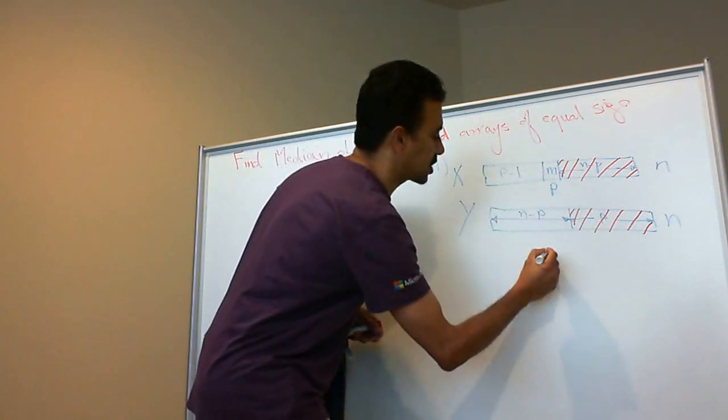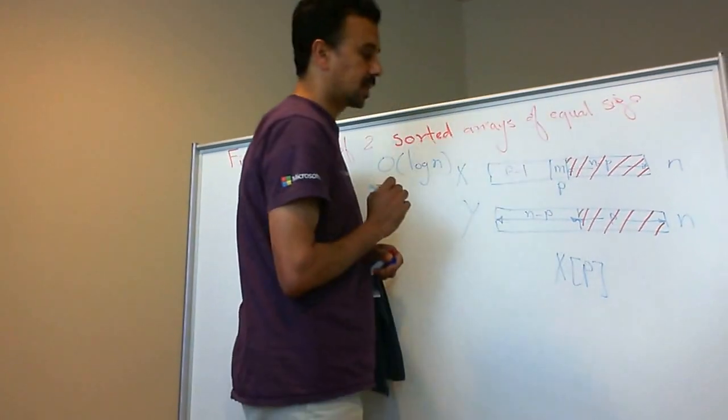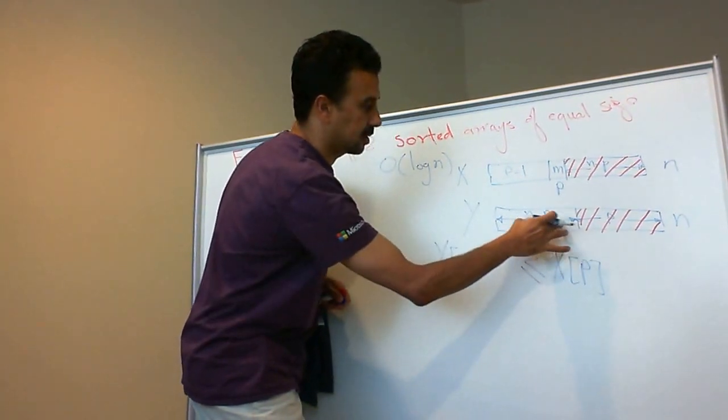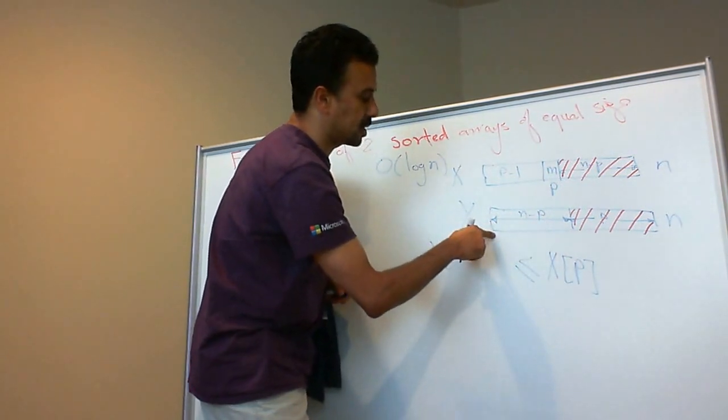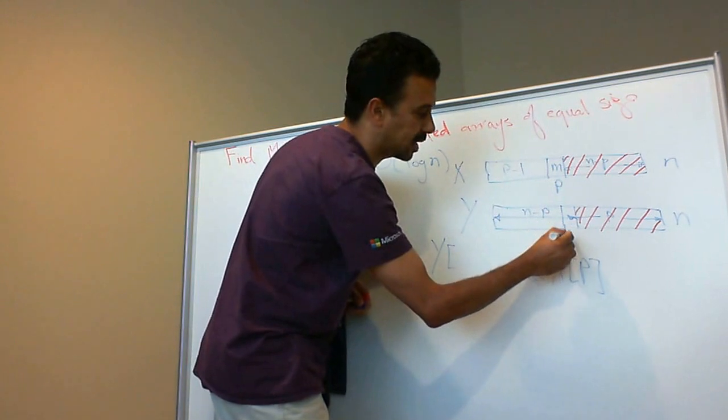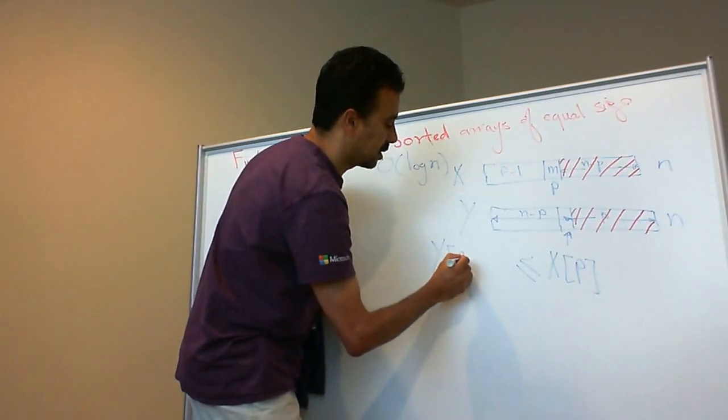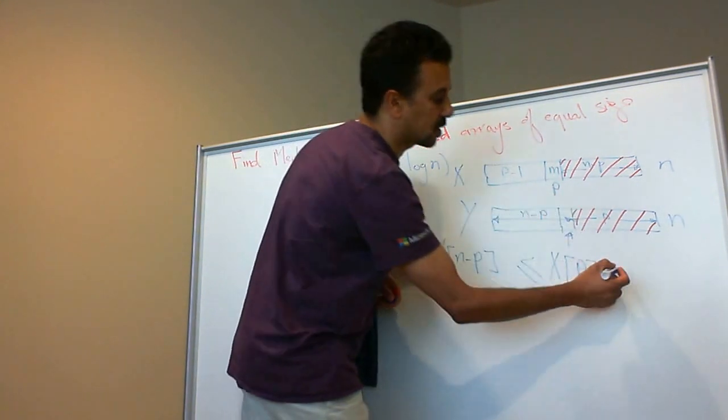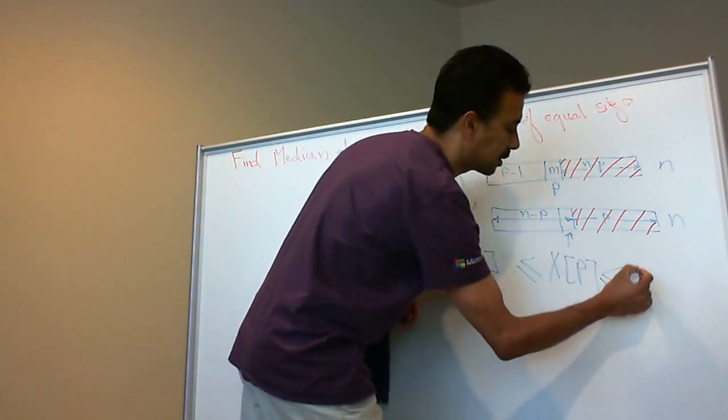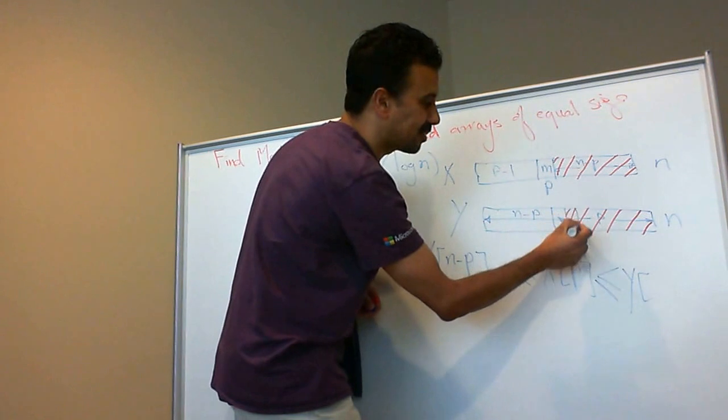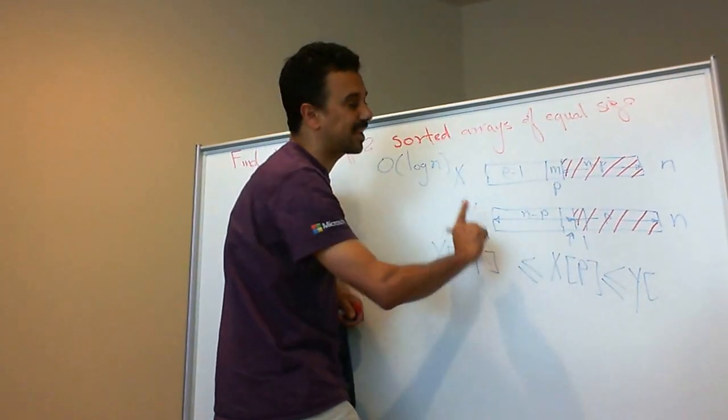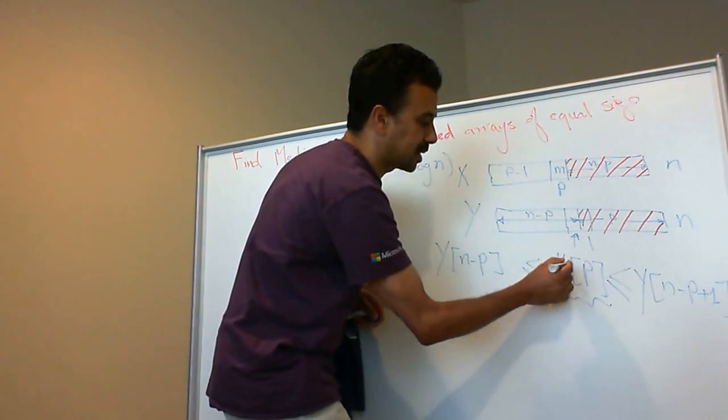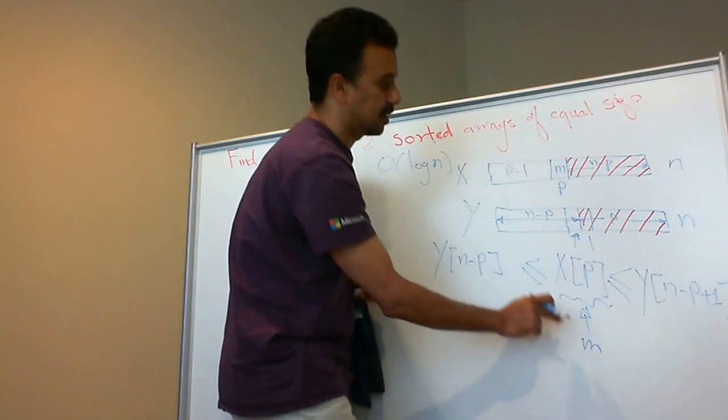The property is: m, which is x[p], should be greater than all elements in y from index 0 to y[n-p]. But also, this element should be less than y[n-p+1]. That element, x[p], which is the median value m, should have this property.